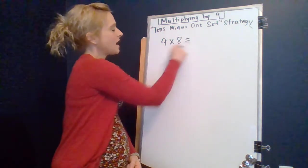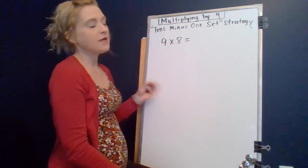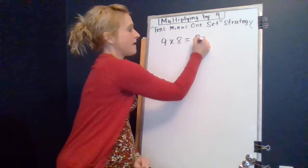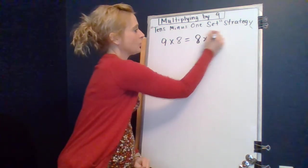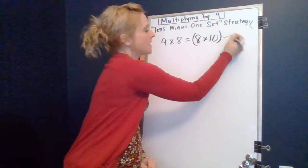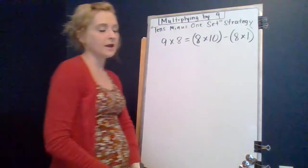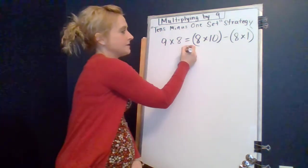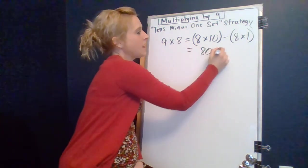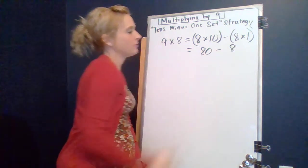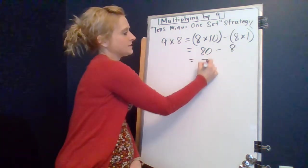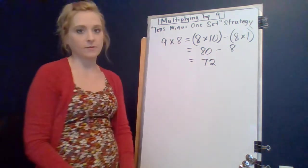Nine times eight, so we're thinking about the factor that is not nine and we're going to multiply that factor by ten, so ten groups of eight minus one group of eight. So eight times ten is eighty and eighty minus one group of eight equals that seventy-two.